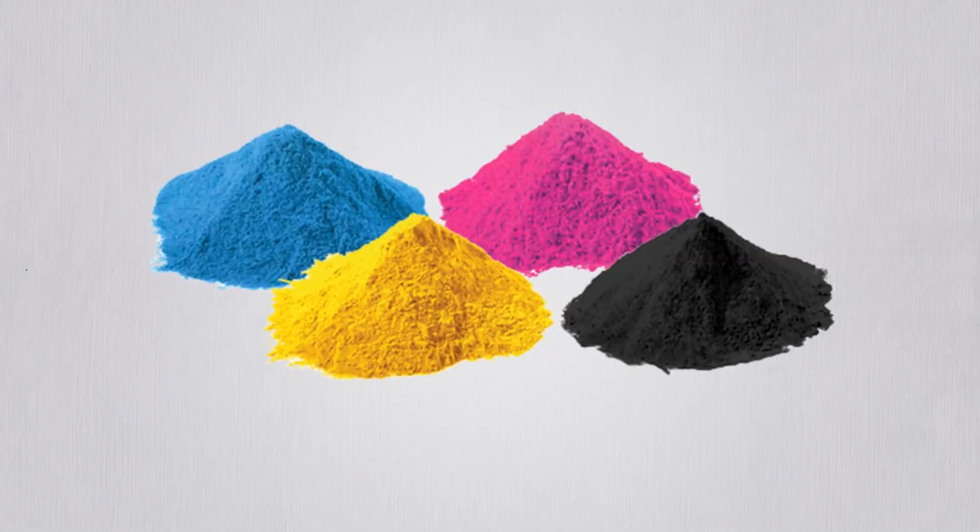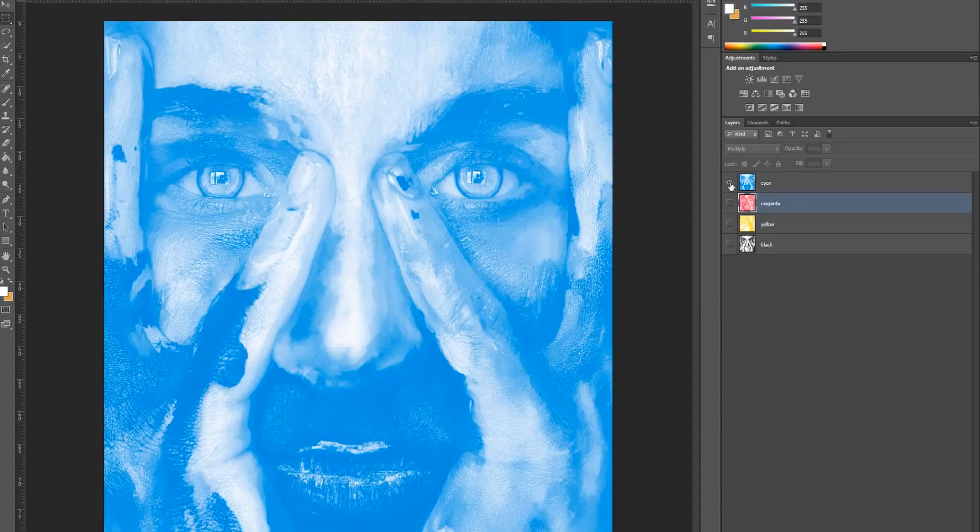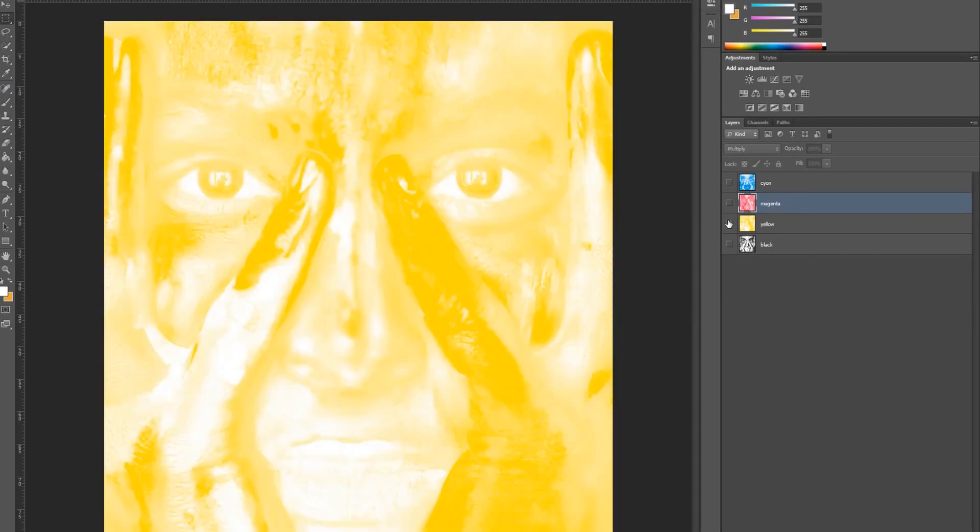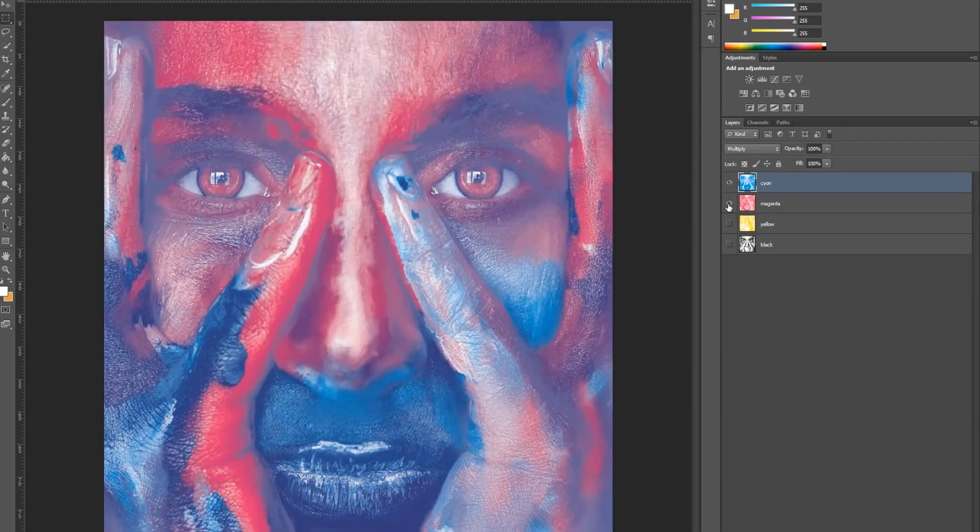Looking at each layer, cyan is blue, magenta is red, and yellow is yellow. Let's overlap these colors. Layers overlap cyan and magenta like we saw a moment ago.